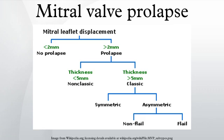Mitral valve prolapse, also known as systolic click murmur syndrome or billowing mitral leaflet syndrome, is characterized by the displacement of an abnormally thickened mitral valve leaflet into the left atrium during systole. There are various types of MVP, broadly classified as classic and non-classic.